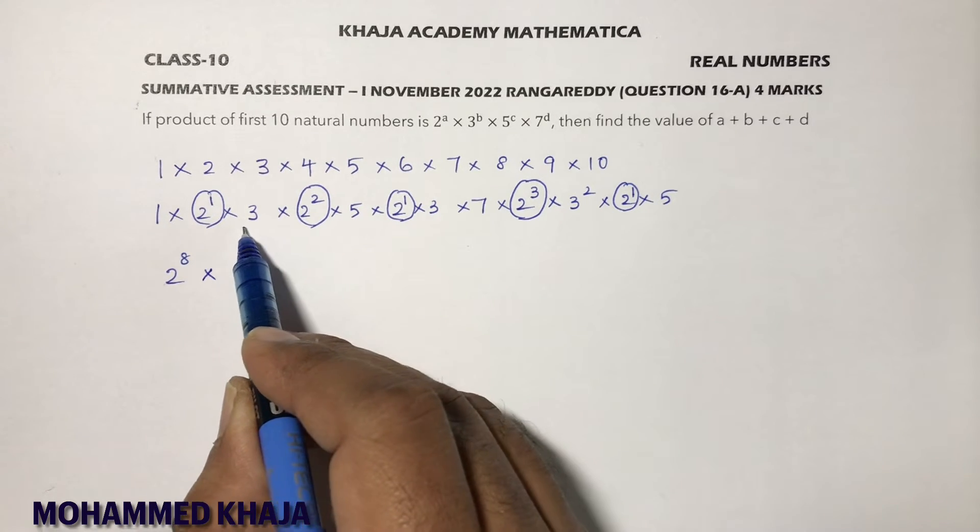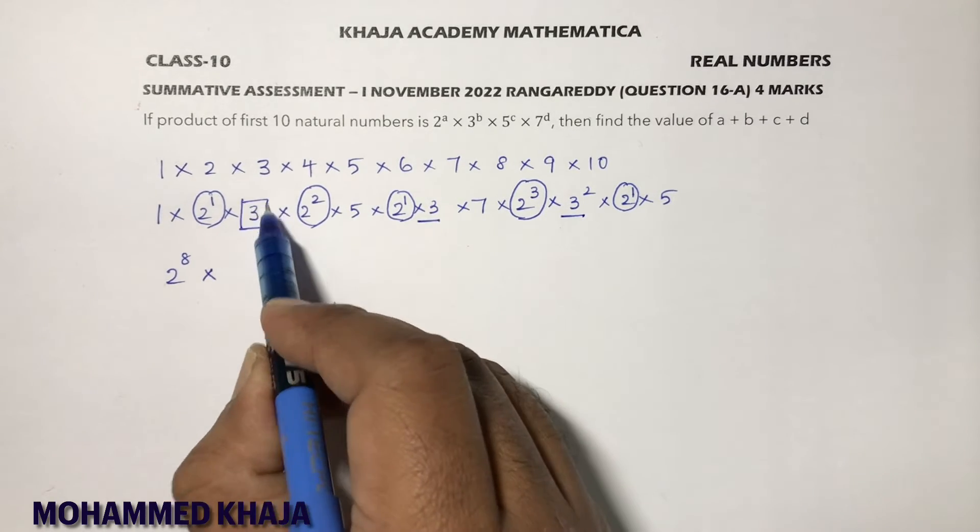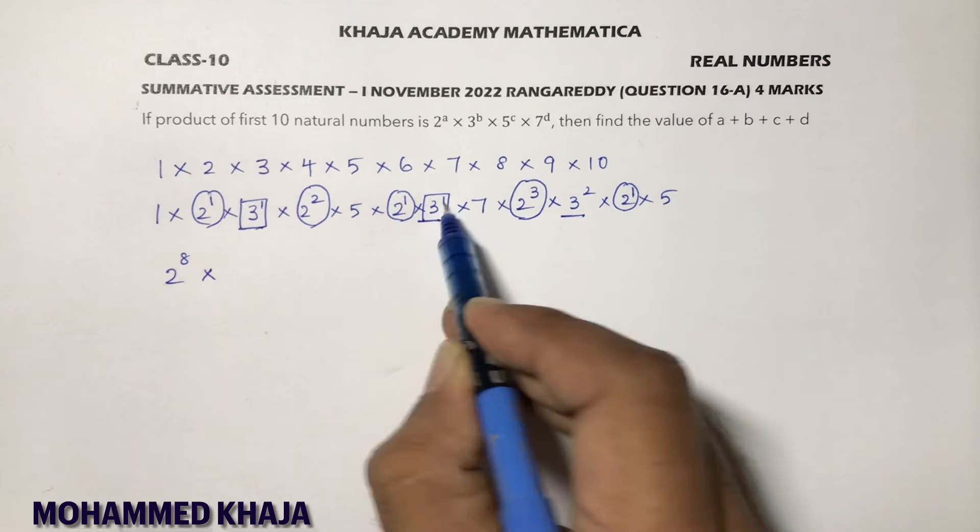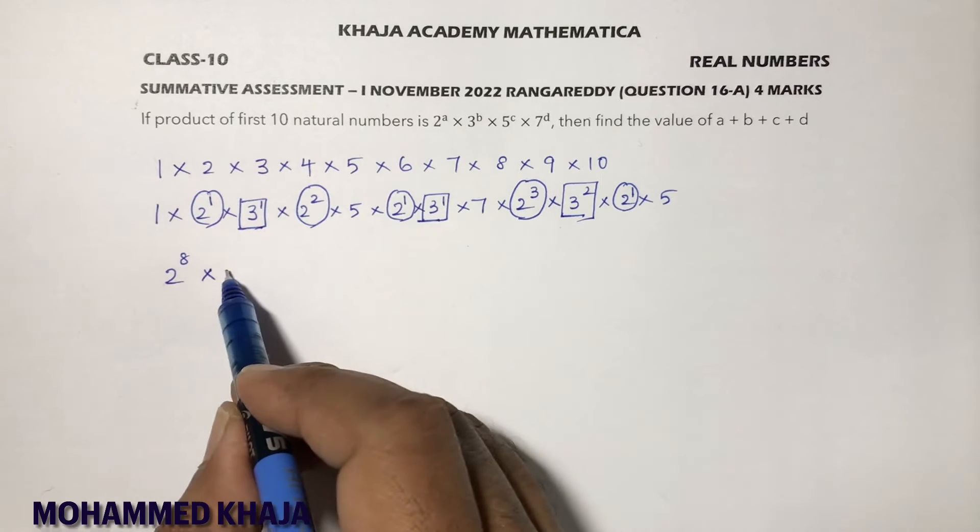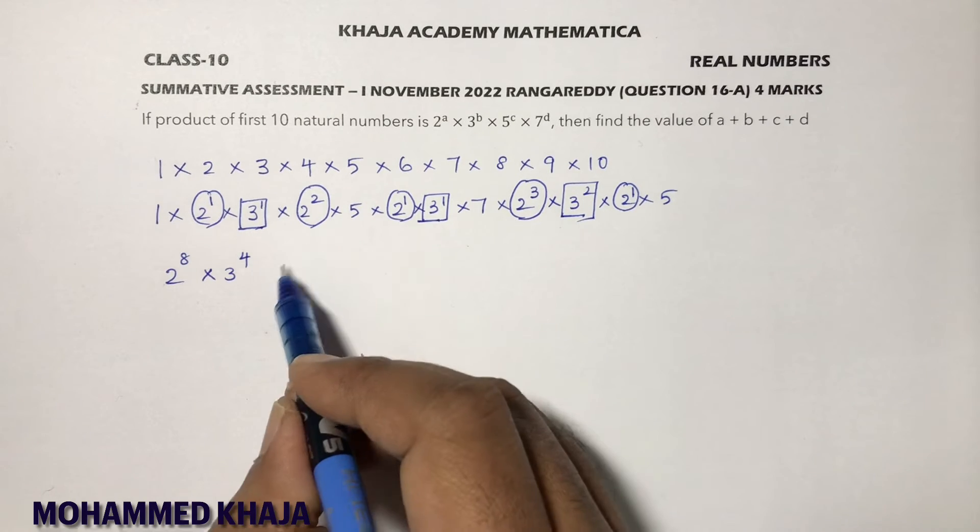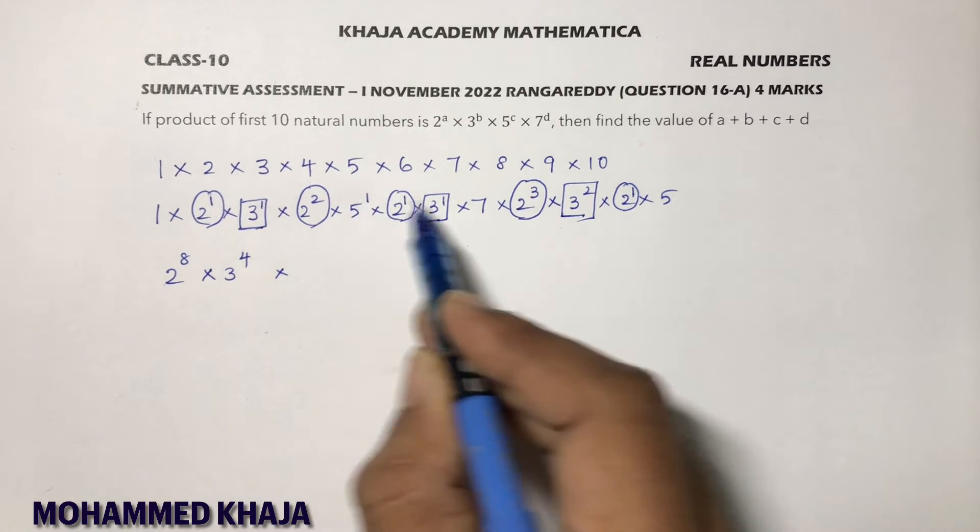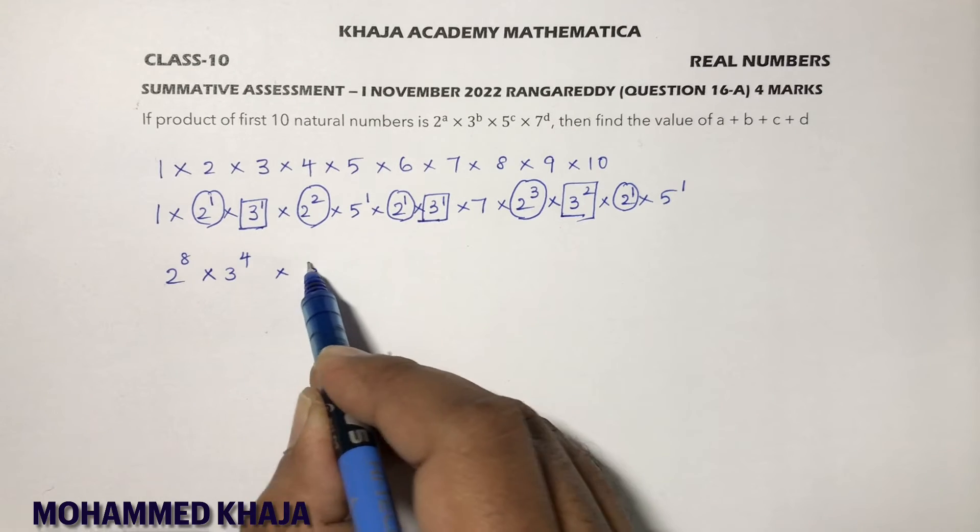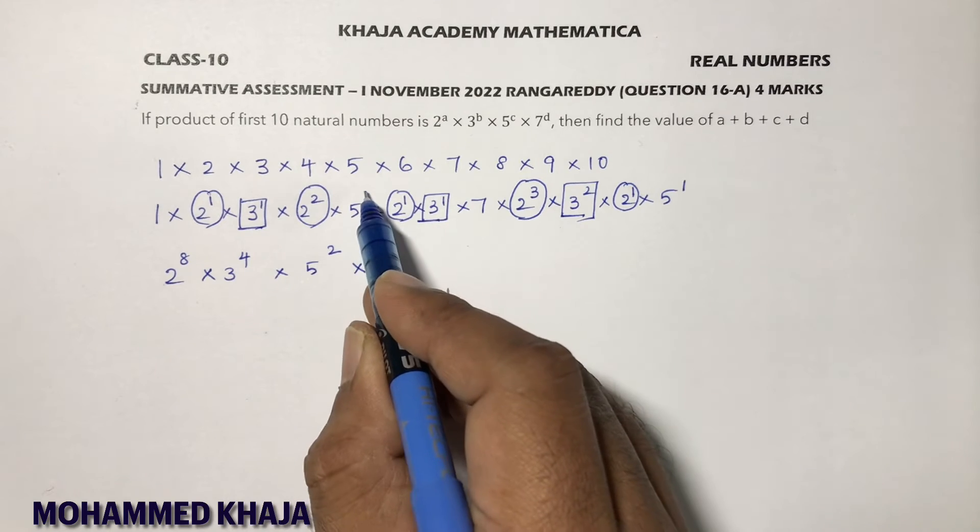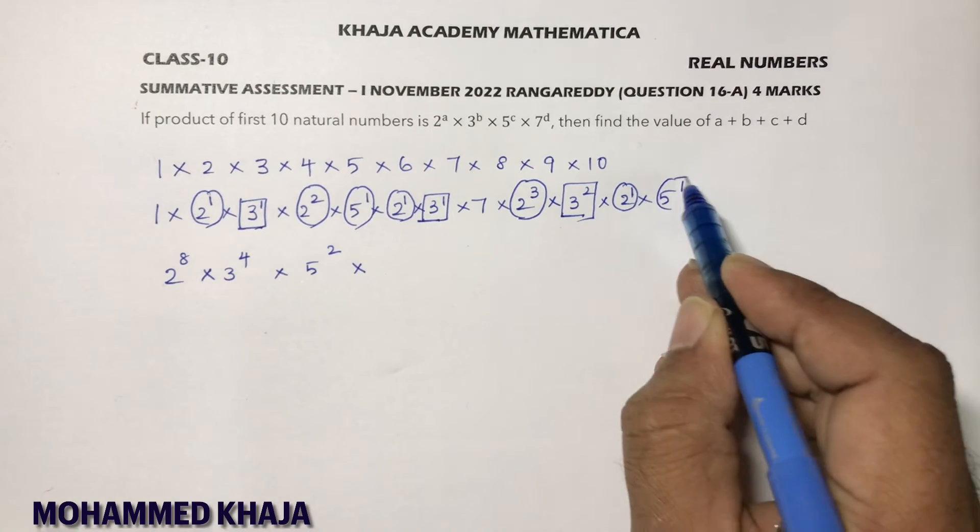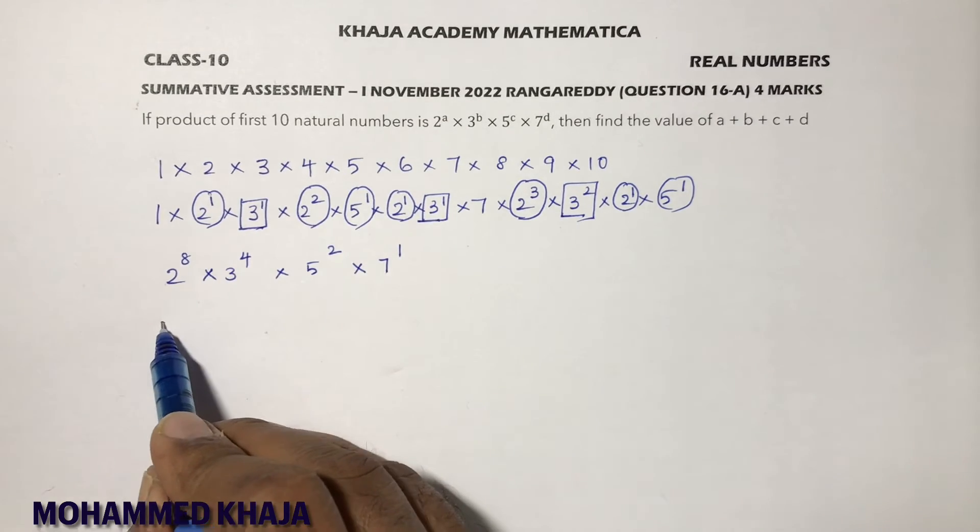For 3: here 1, here 1, and here 2. So 3^1 × 3^1 × 3^2, total 3^4. For 5: here 1, here 1, so 5^2. And 7 is just 7^1.